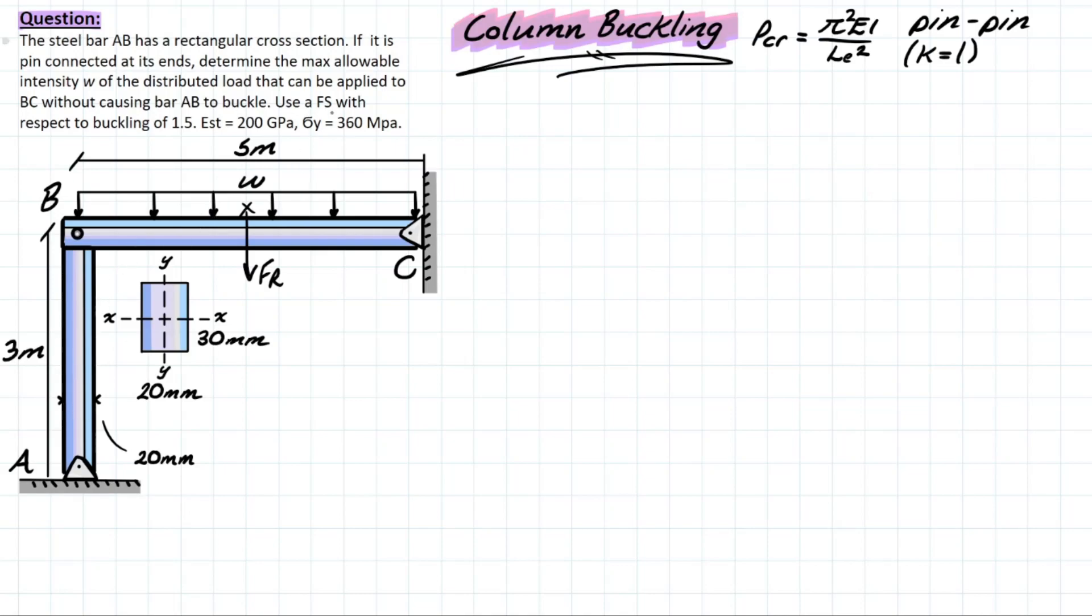Wants us to use the factor of safety with respect to buckling of 1.5, and it gives us the steel properties: elasticity and the yield strength.